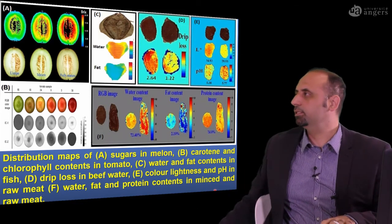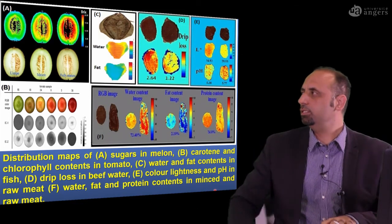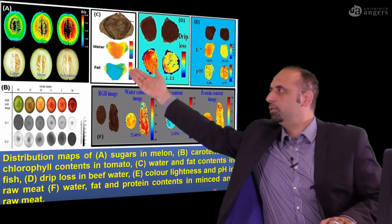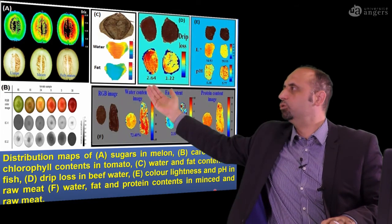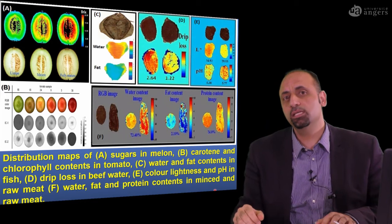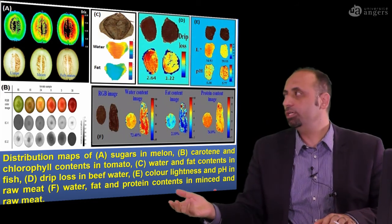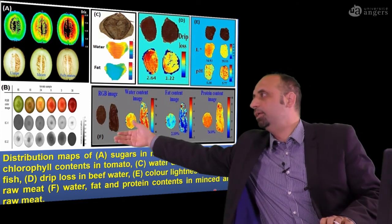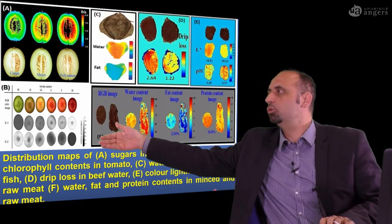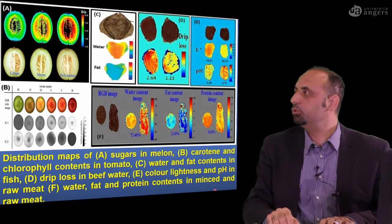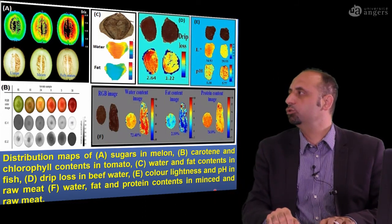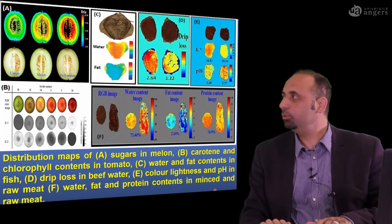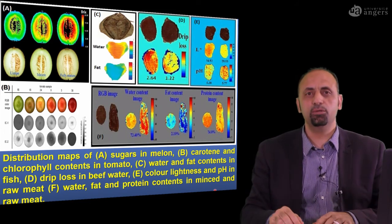These are some examples coming from different references. As you see, these researchers tried to predict the sugar content in melon. This is from our work, where we tried to predict water content, fat content, and protein content in fish and meat products. And in this application, this researcher tried to show the chlorophyll content distribution inside the tomato at different maturity stages. A lot of applications are available using multispectral imaging and hyperspectral imaging.